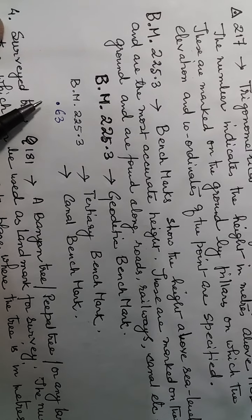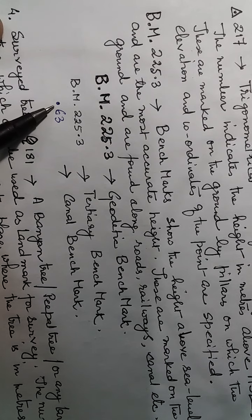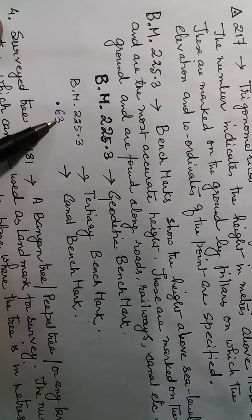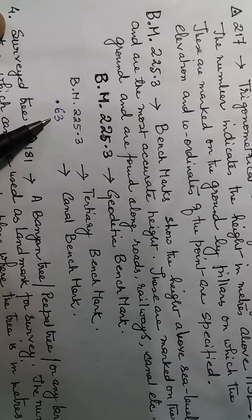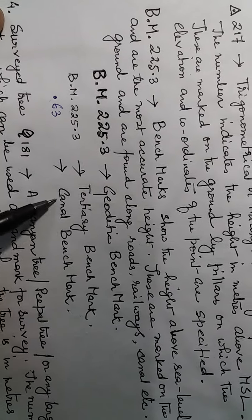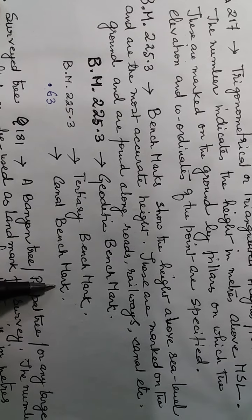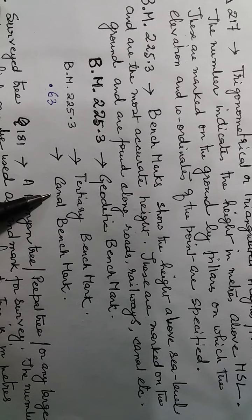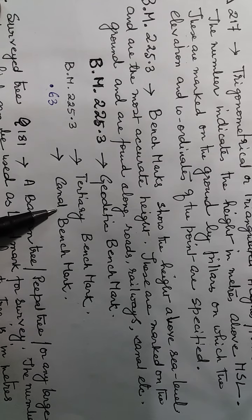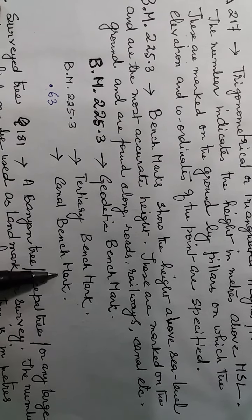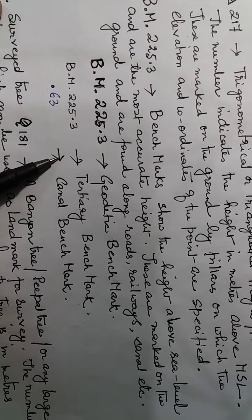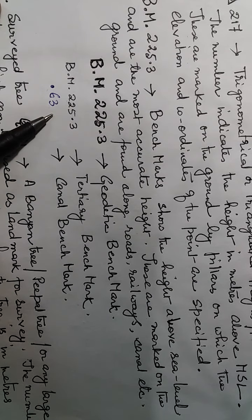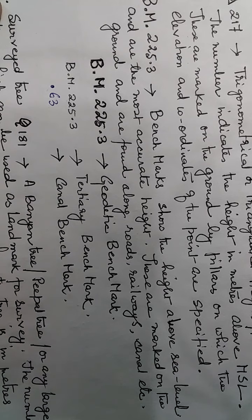The third type is given in blue — a blue dot with a number written in blue, like 63. These are called canal benchmarks, usually placed when a canal is being constructed. These are marked on the ground as well as on the topo sheet.